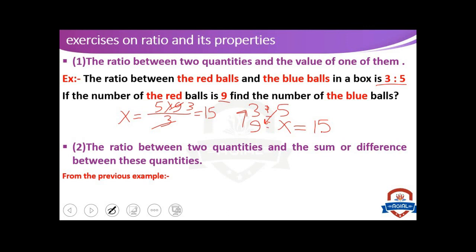The second type of exercise: the ratio between two quantities and the sum or difference between these quantities. From the previous example, the ratio between the red balls and the blue balls is 3 to 5, and the total number of balls equals, for example, 24.